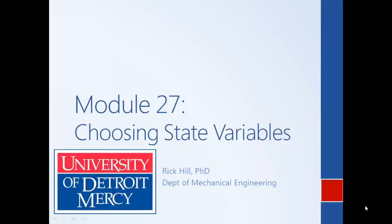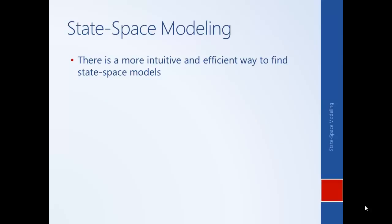In the previous example we were able to put our system into state space form by a simple change of variables. It turns out that there are better ways to choose our set of state variables, i.e., better ways to put our system into state space form. Specifically, if we blindly do this change of variables we may end up using more state variables than are necessary — a larger set of equations than we need.